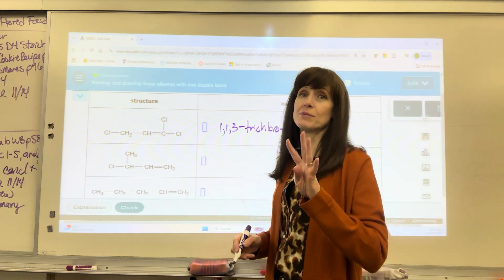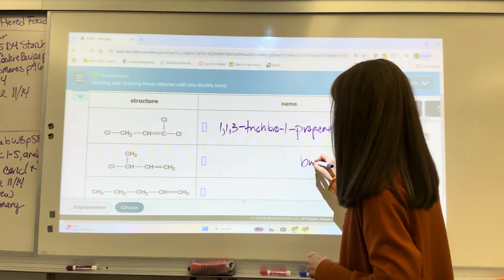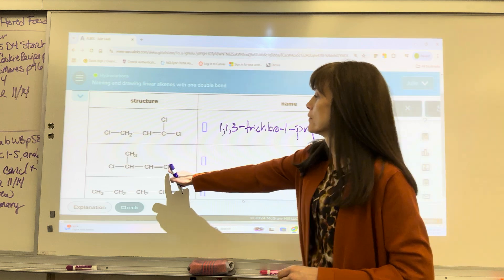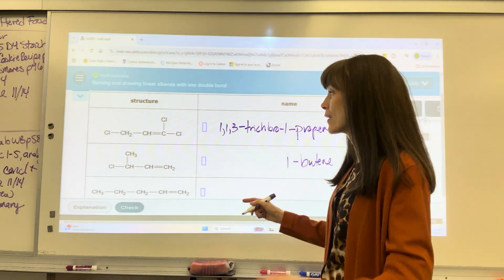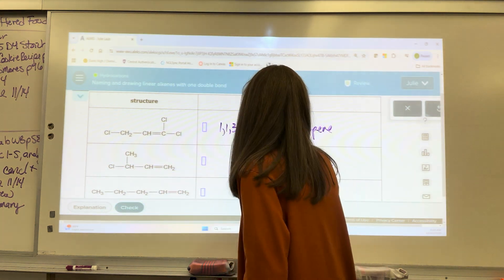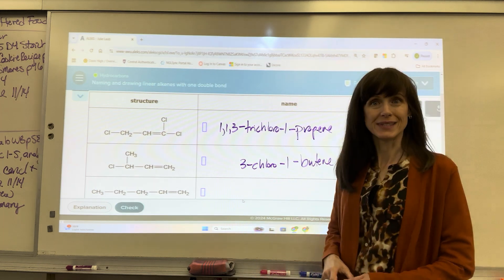So this one four is going to be butene because of the double bond. Again, I'm working backwards. I'm going to do the parent chain first. The first carbon in that double bond to touch the double bond is a one. And then I only have one substituent. It's this chloro and that's on the one, two, three. So this would be a three chloro one butene. Nice.